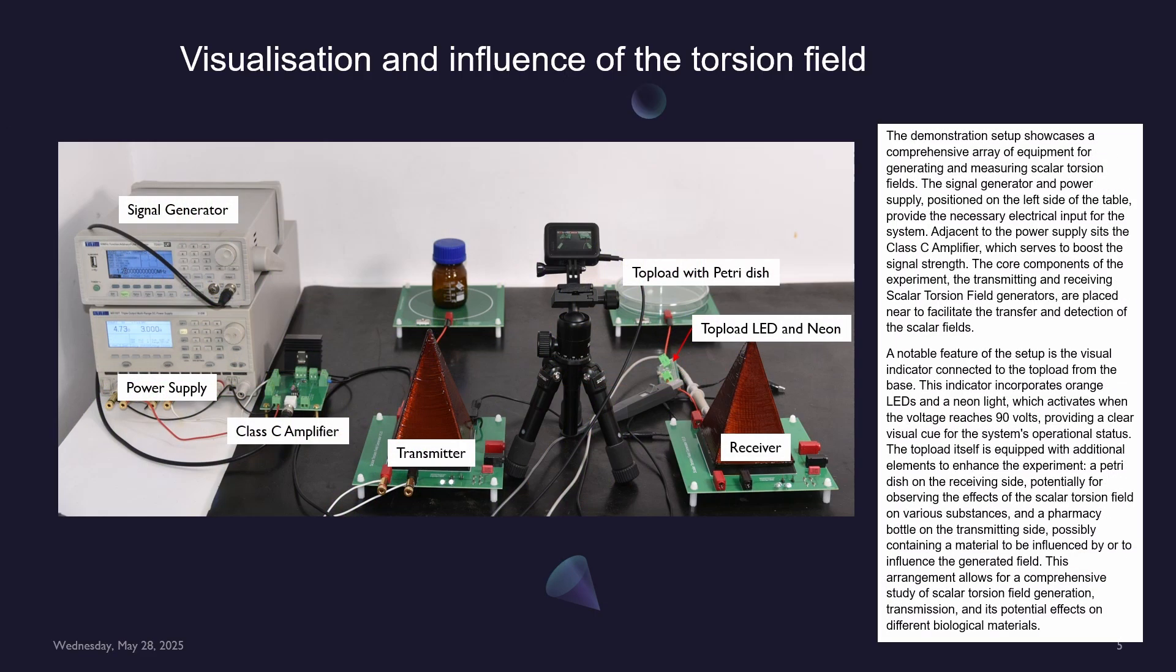The demonstration setup showcases a comprehensive array of equipment for generating and measuring scalar torsion fields. The signal generator and power supply, positioned on the left side of the table, provide the necessary electrical input for the system. Adjacent to the power supply sits the Class C amplifier, which serves to boost the signal strength.